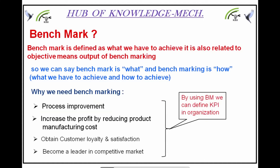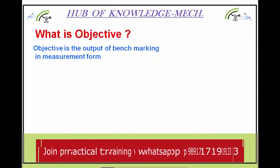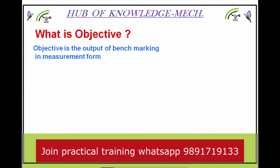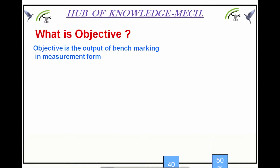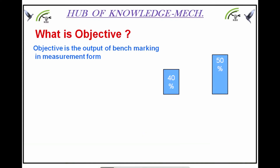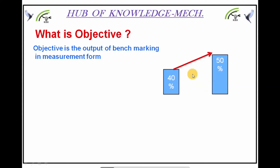By using benchmarking, we can define KPI in an organization. Through benchmarking we can also set our KPI. Next, what is an objective? Objective is the output of benchmarking in measurement form — it is related to benchmark. For example, if the current performance of an organization is 40% on average, and when compared, the best organization's current performance is 50%, then our objective becomes: we have to achieve 50% against 40%.